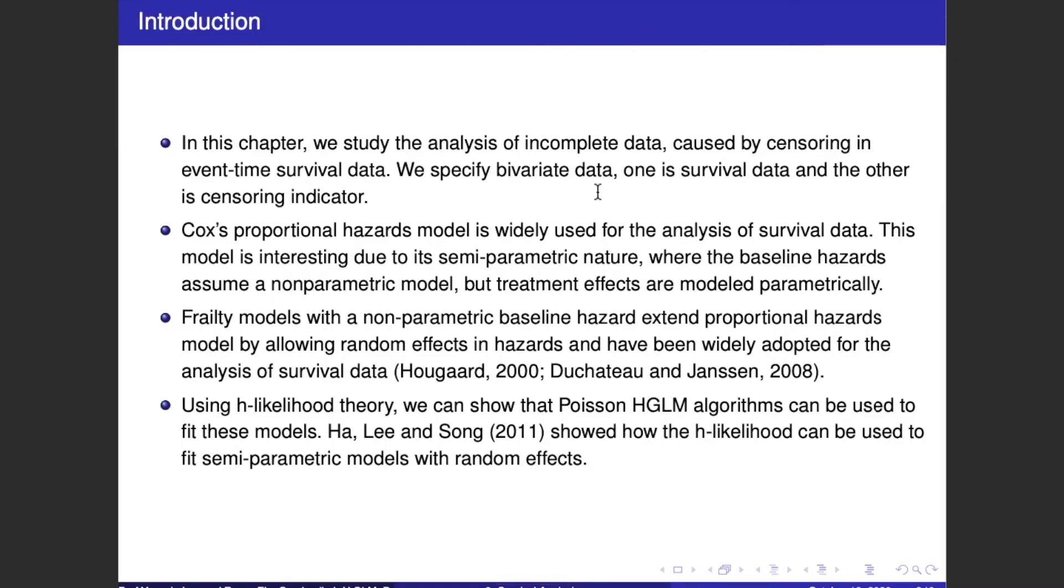In this chapter, we study the analysis of incomplete data caused by censoring in event-time survival data. We specify bivariate data, one is survival data and the other is the censoring indicator.